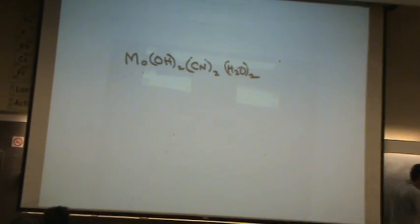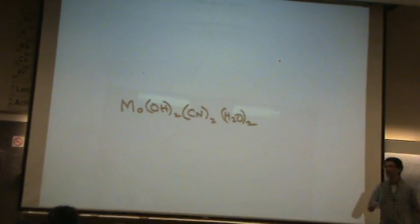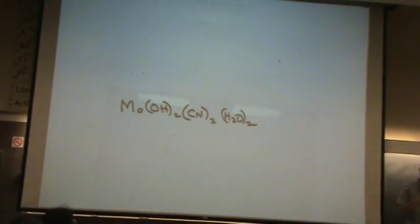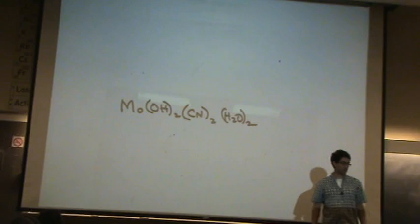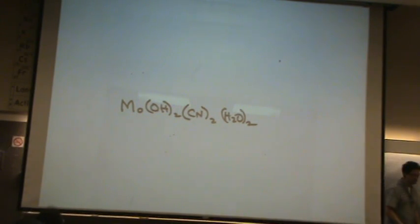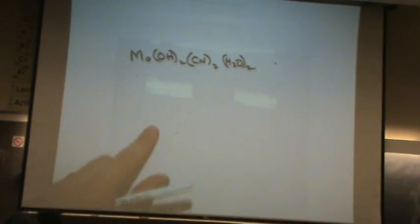We're going to draw all the stereoisomers, and if anything is chiral we'll draw it, otherwise we're going to draw everything. First of all, what's the coordination number? Six, so it's octahedral. I'm going to draw a bunch of octahedral complexes here.